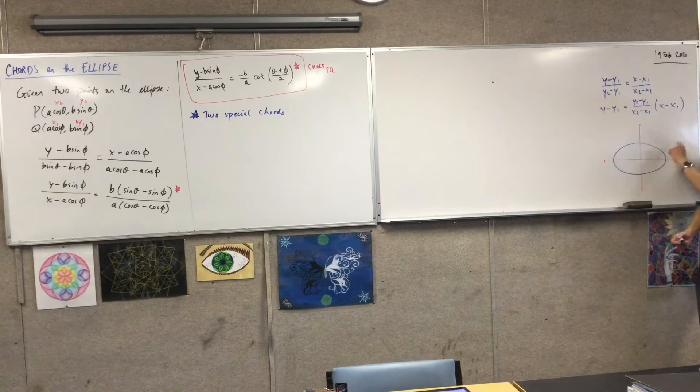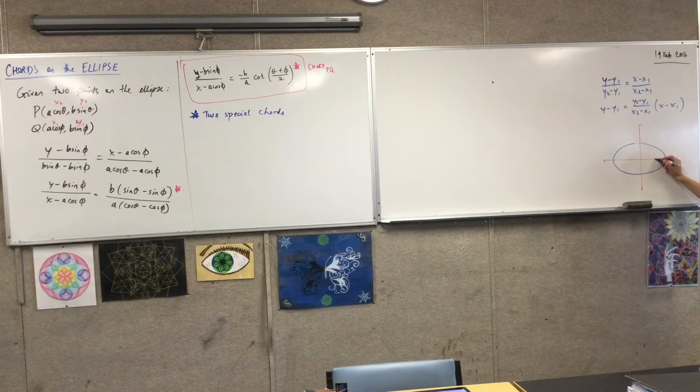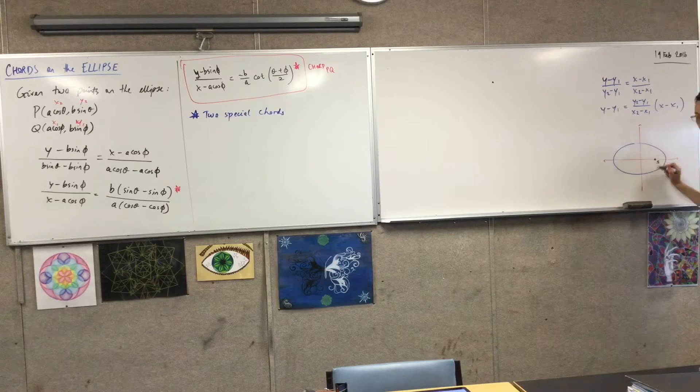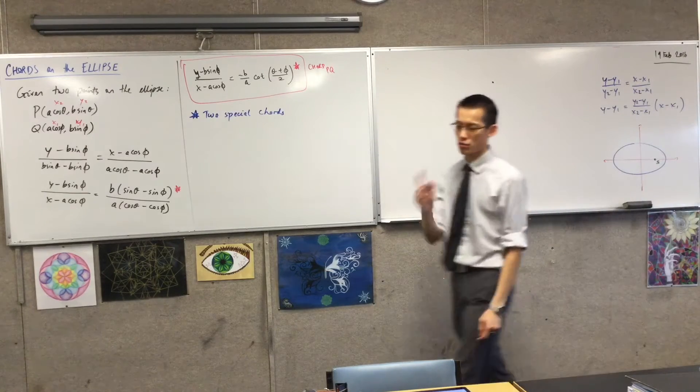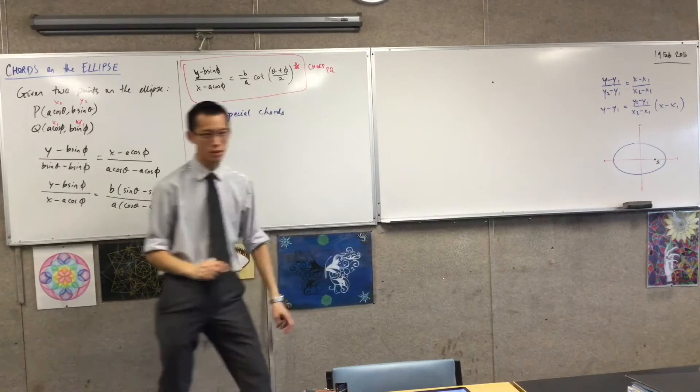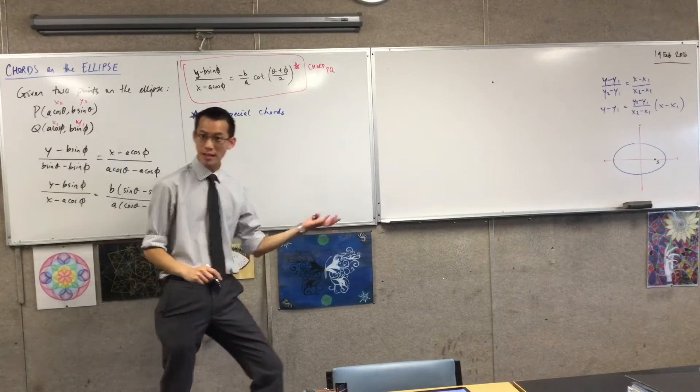So a chord is joining any two points on the ellipse. But if you think about this guy here, S, and I'm not going to draw him in because it will just cloud the diagram a little bit. I've got another focus, obviously, S dash.